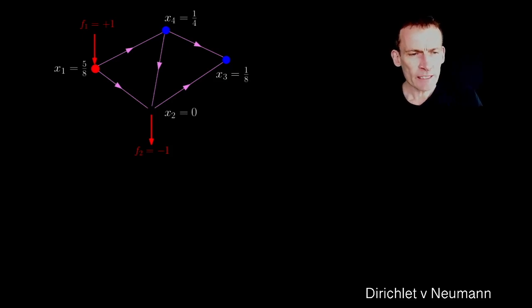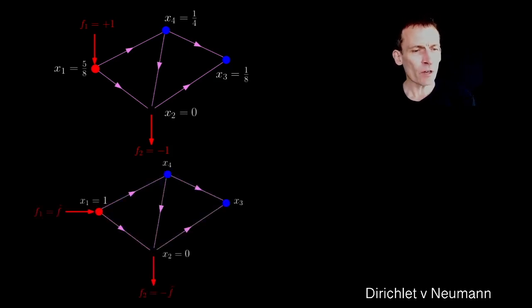But there's another type of thing I could have asked, even just restricting to these two-point source-sink problems. This is what we call more of a Dirichlet problem. And what it means is that you don't specify the flux into the circuit, or the divergence at the boundaries, in this case nodes 1 and 2.